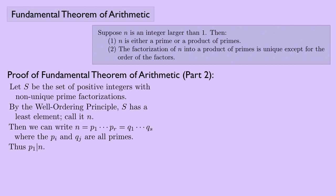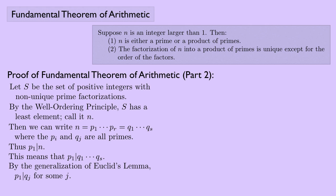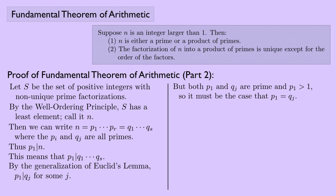We know that p1 has to divide n. This means p1 also has to divide q1 times q2 times q3 all the way up to qs, since n equals the product of all those q's. By the generalization of Euclid's Lemma, we know that p1 has to divide one of those q's — so for some j, p1 has to divide q sub j. But both p1 and q sub j are prime, and p1 is greater than one. So it must be the case that p1 equals qj. We're going to reorder the q's so that p1 equals q1.